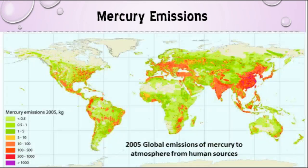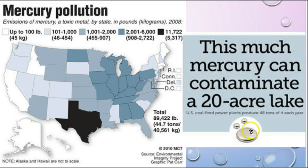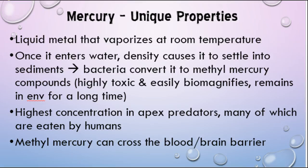If you look at mercury emissions, you'll see some relatively high areas, with the highest areas in those highest-population countries. In the US, Texas by far has the most mercury, but any of the darker areas on the map have very high levels of mercury pollution. About 48 tons of mercury comes from all US coal-fired power plants per year, and it only takes very little to contaminate the environment, so you can really see the impact this could have.